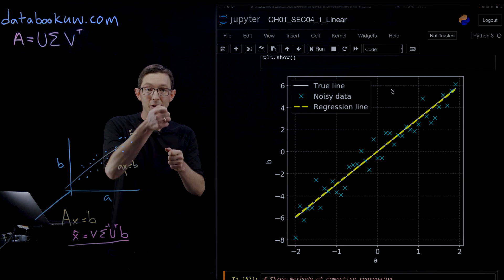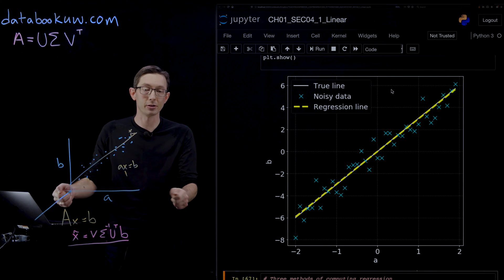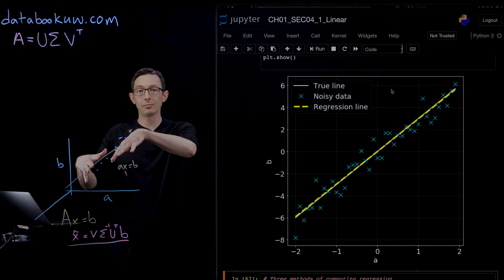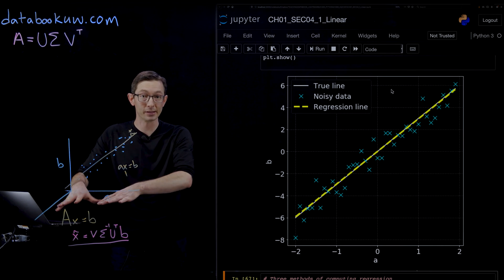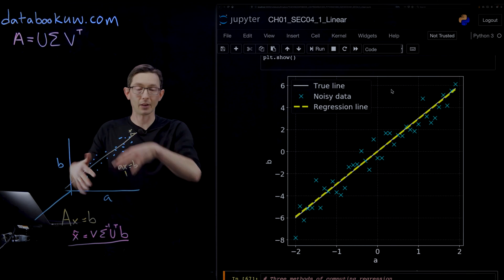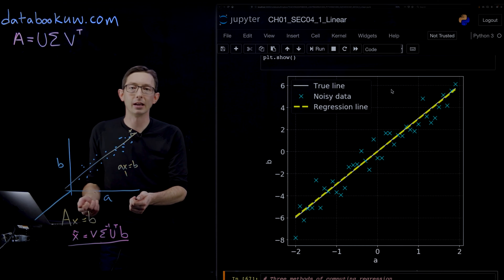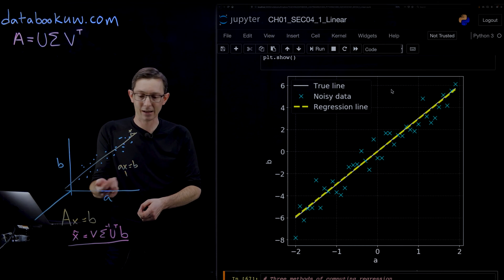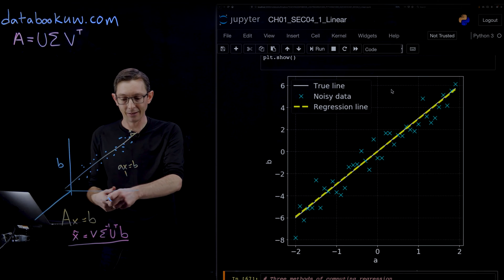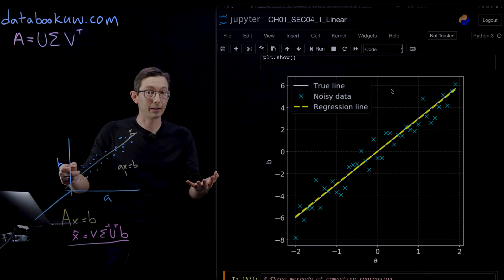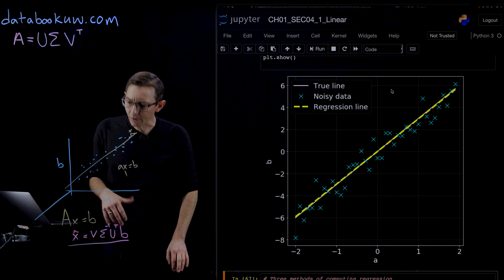Maybe I have four or five or six different variables I measure, and I want to build a linear regression model from those variables to this outcome B. Again, this could be demographic information: age, sex, weight, diet, things like that, and B could be risk of a heart attack.